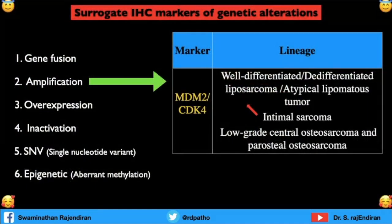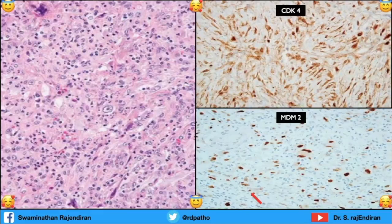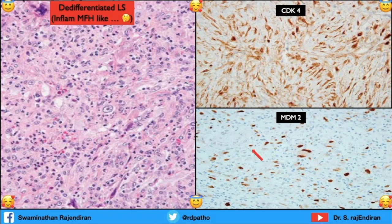Now moving to amplification markers — mainly MDM2 and CDK4, primarily in liposarcoma. Remember they are also positive in other tumors, especially low-grade central osteosarcoma and parosteal osteosarcoma. This very pleomorphic tumor with a lot of inflammatory and malignant cells — previously called malignant fibrous histiocytoma inflammatory type — is nicely positive for CDK4 and MDM2, so the diagnosis is dedifferentiated liposarcoma.